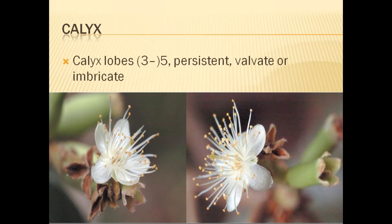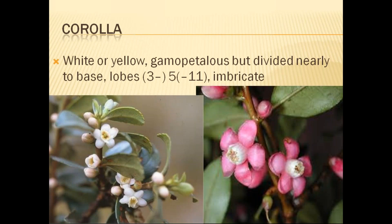The calyx lobes are three to five, with a maximum of five. They are velvet or valvate in arrangement and united to form a tube — the calyx tube is generally formed. The corolla is generally white or yellow colored. They are gamopetalous, united at the base, but nearly divided up to the base — very slightly united. The lobes are three to five, maximum eleven in number, and in imbricate arrangement.